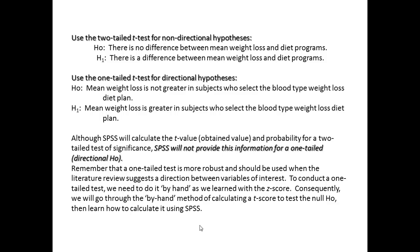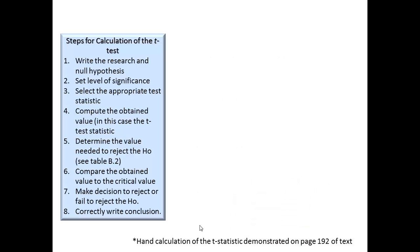You'll often want to use a one-tailed test since it's more robust and should be used whenever the literature suggests a direction. In this lecture, we'll learn how to calculate the t by hand and compare it with the critical value, and also go through the steps using SPSS. These are the eight steps for the calculation of a t-test: write the research and null hypothesis, set the level of significance, select the appropriate test statistic, compute the obtained value, determine the critical value needed to reject the null by comparing it to the t-distribution in table B2, compare the computed value to the critical value, and make a decision to reject or fail to reject the null.